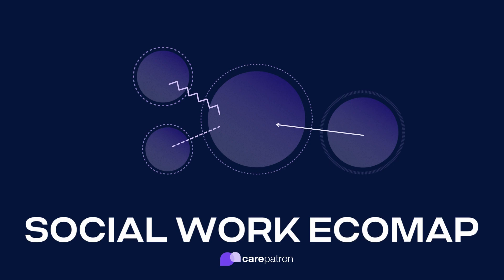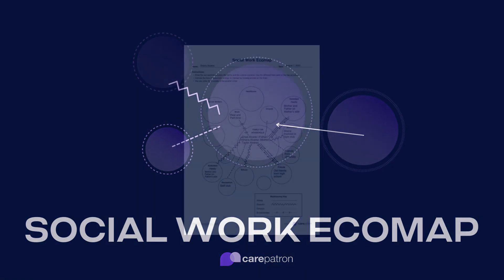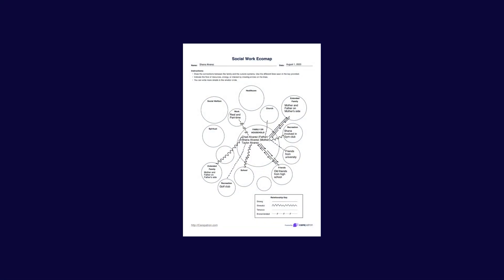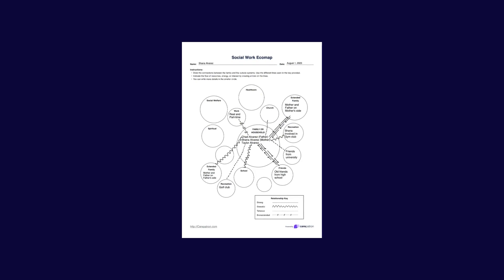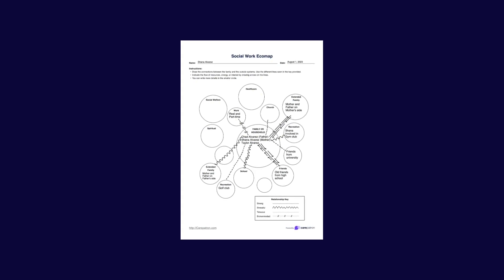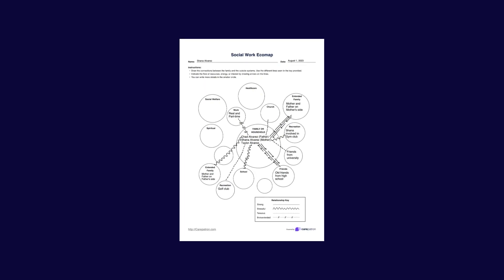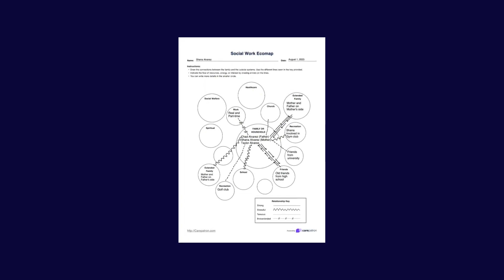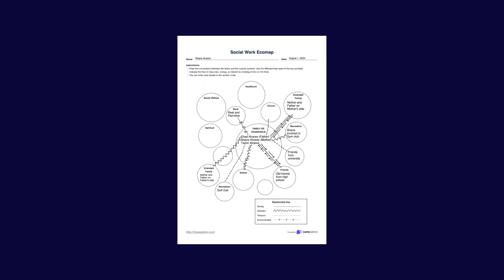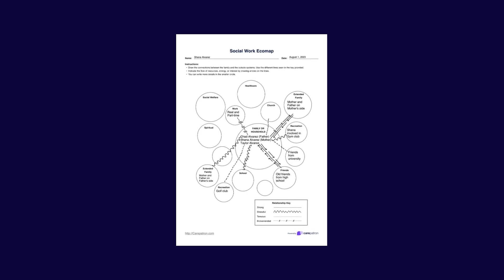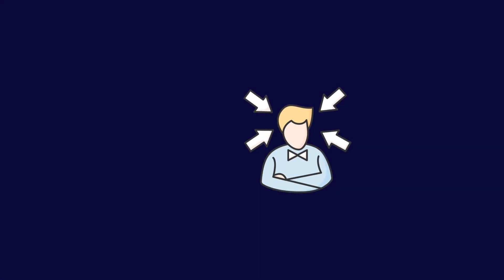An eco-map is a diagram or a visual representation of a client's relationships with individuals and organisations that social workers use to gain insight into the relationships of their clients and how those impact them.